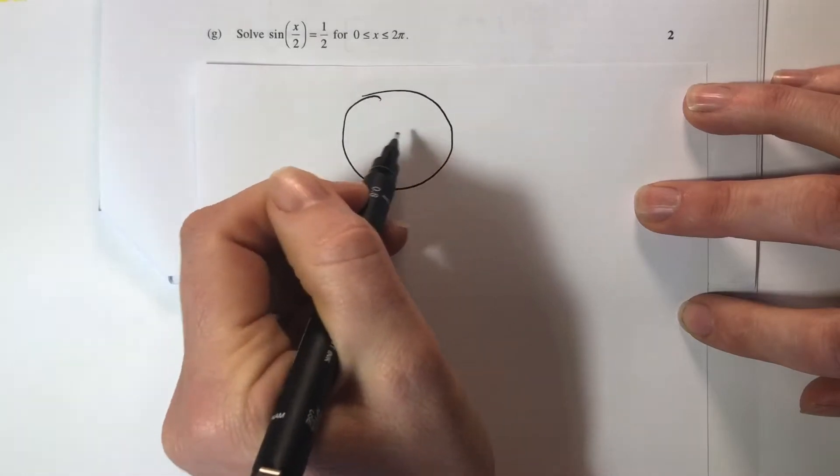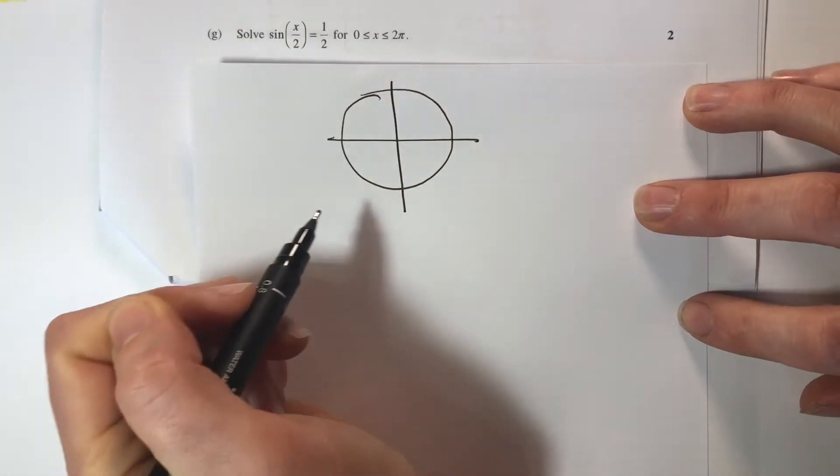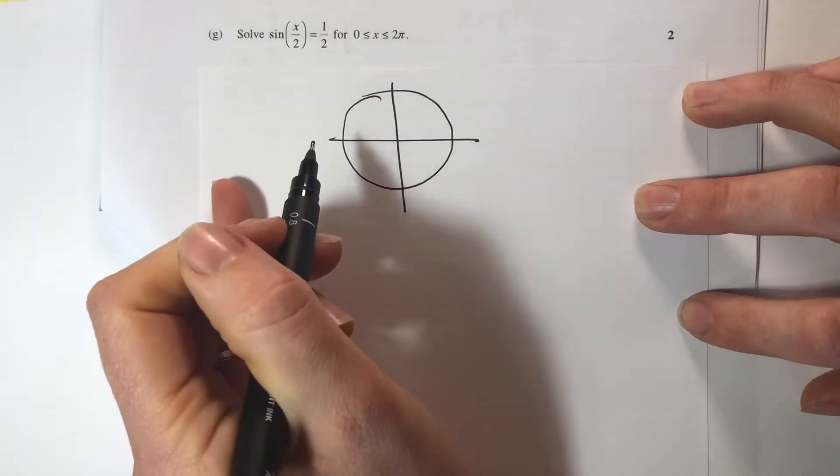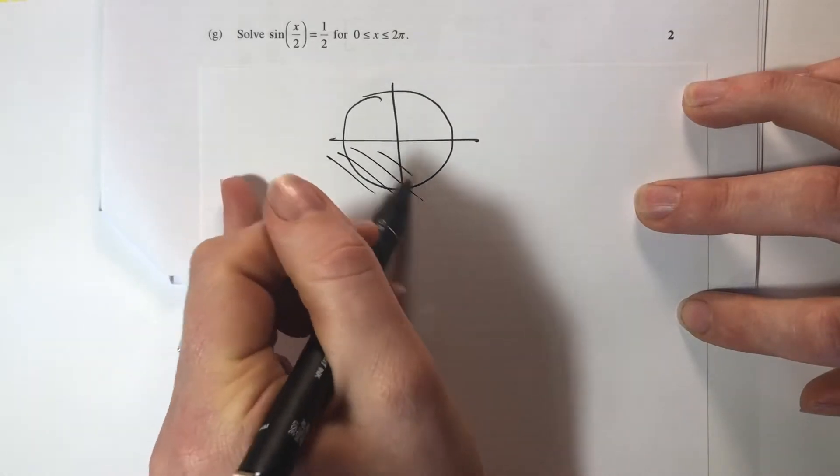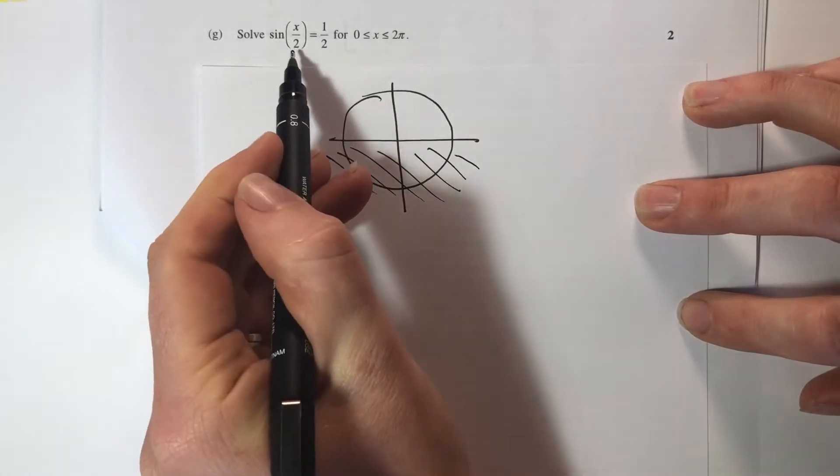What we're saying here is if x is from 0 to 2π, that's one circle, x on 2 would be from 0 to π. So actually I only need half a circle because I'm solving sine of x on 2.